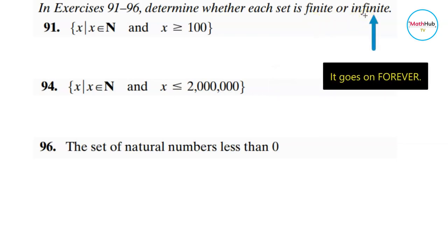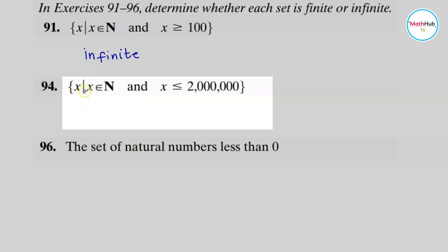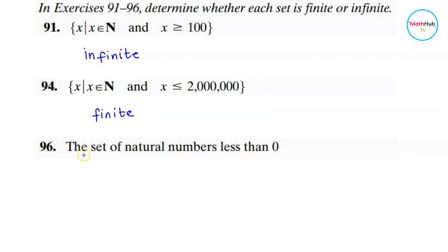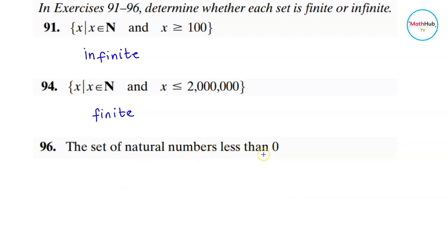Lastly, we determine whether each set is finite or infinite. A set is finite if its cardinality is a natural number; it is infinite if it goes on forever. Number 91 — the set of natural numbers greater than or equal to 100 — starts at 100 and goes to infinity, so it is infinite. The set of natural numbers less than 2 million has a definite ending, so it is finite. The set of natural numbers less than zero is empty — since natural numbers start at one, there are none — but an empty set is still finite because its cardinality is zero.